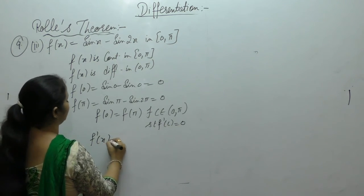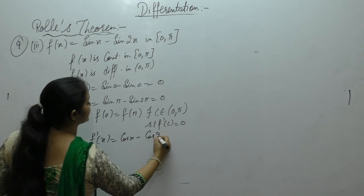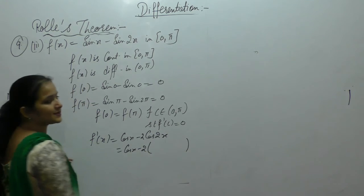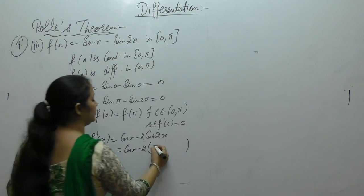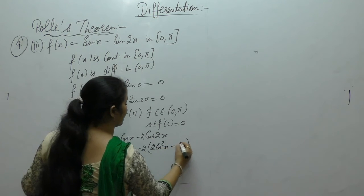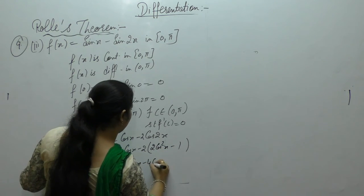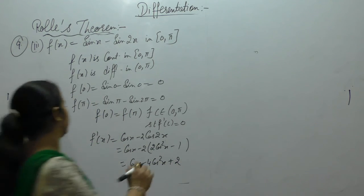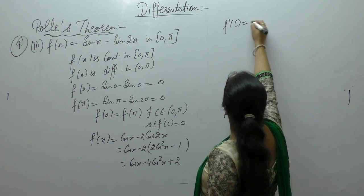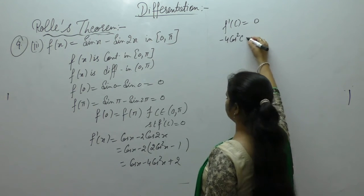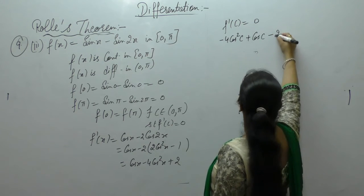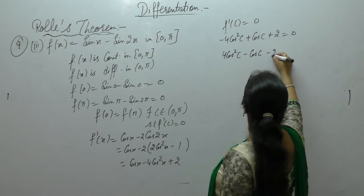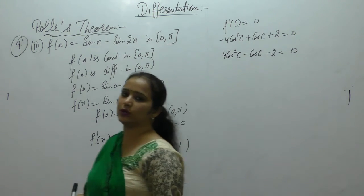f'(x) = cos x - 2cos 2x. Using the identity cos 2x = 2cos²x - 1, we get f'(x) = cos x - 4cos²x + 2. Setting f'(c) = 0: -4cos²c + cos c + 2 = 0, or equivalently 4cos²c - cos c - 2 = 0.